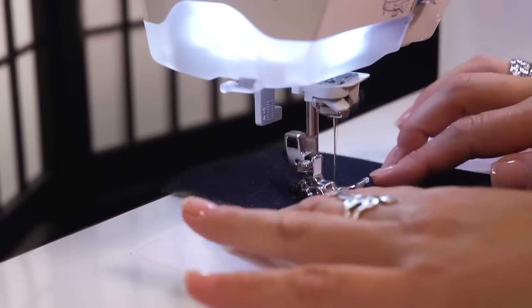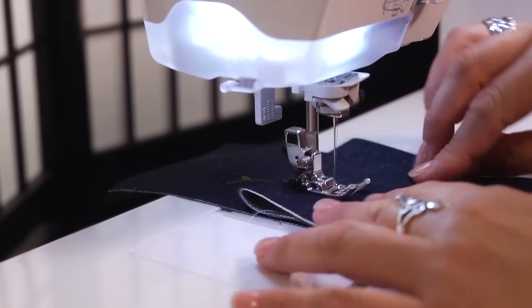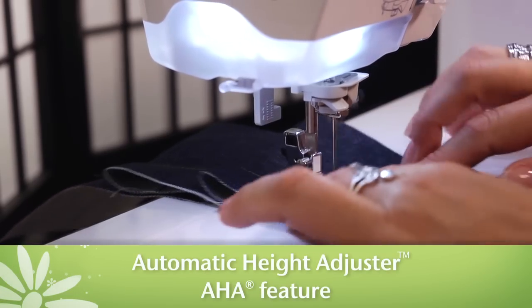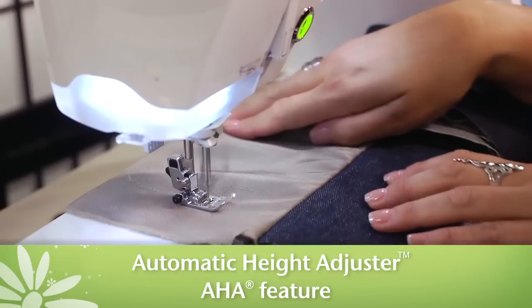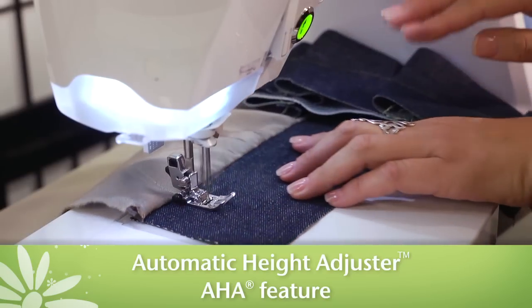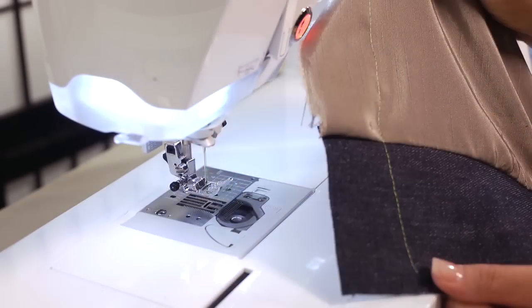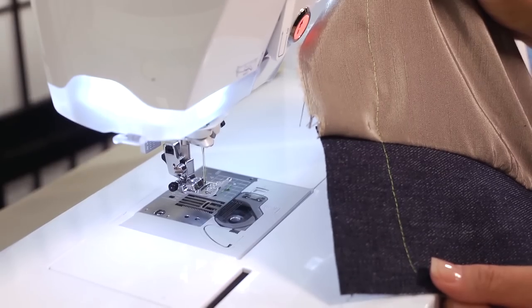The most loved features from the original Quattro have found a home in Quattro II, including the Automatic Height Adjuster AHA feature, which senses varying fabric thicknesses and automatically adjusts presser foot pressure to ensure smooth, even stitches over a range of fabrics.